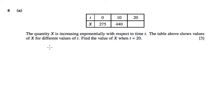So that means we can write down that the value of X is equal to the original value, which is 275, times by e to some constant kt, where k is positive because it's increasing.